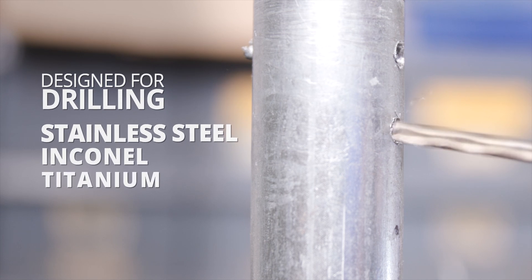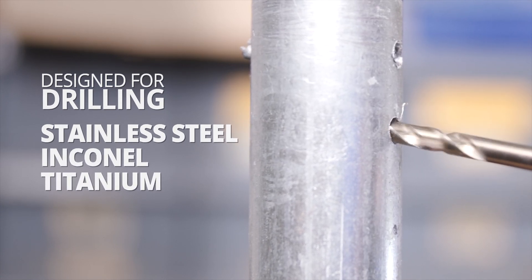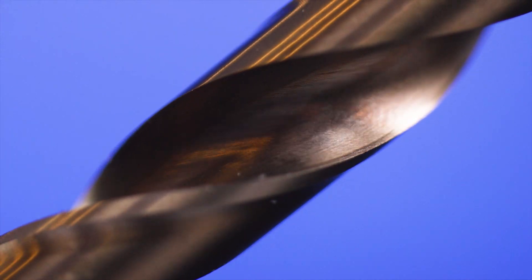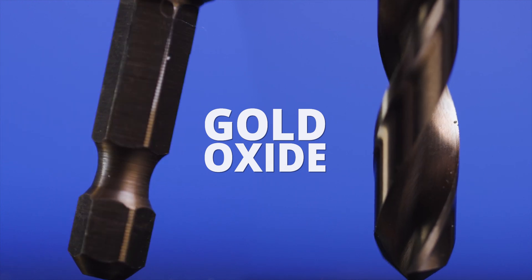They are especially effective in drilling tough, high-tensile strength materials like stainless steel and titanium. Drill America Cobalt Hex Shank Drill Bits are surface-treated with gold oxide to increase durability and hardness.